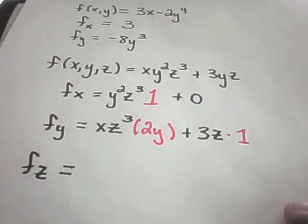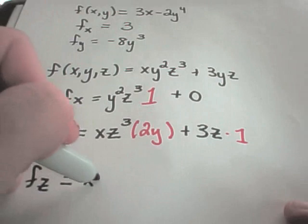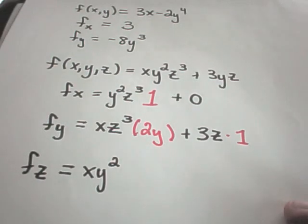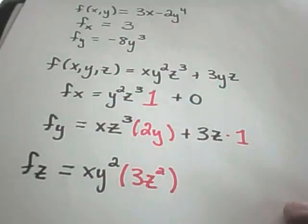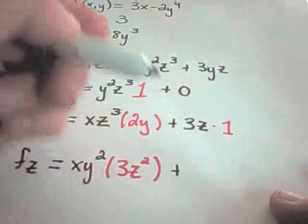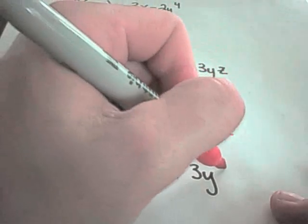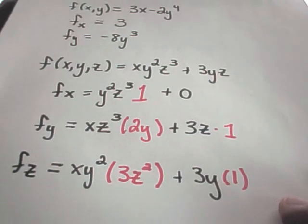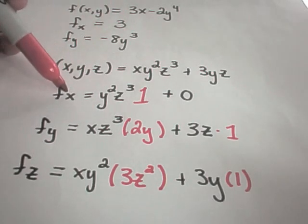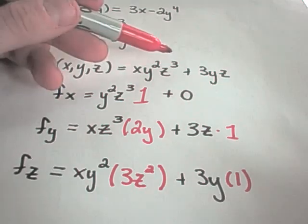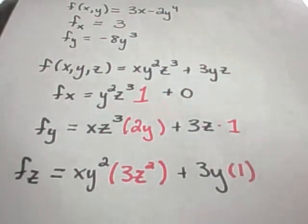Now we'll take the partial derivative with respect to z. Now z is my variable, and x and y I'm treating like constants. So I leave x and y squared alone, and the derivative of z cubed gives me 3z squared. For the other term, 3y is a constant that comes along for the ride, and the derivative of z is just 1. The thing to remember on these partial derivatives is that, depending on what variable you're taking the derivative with respect to, you treat the other variables like constants and use your normal differentiation rules.